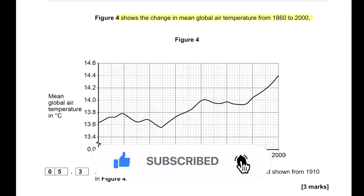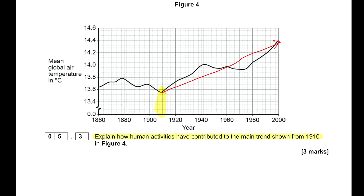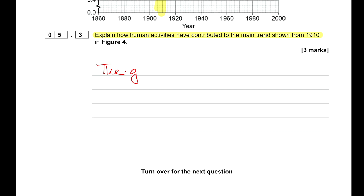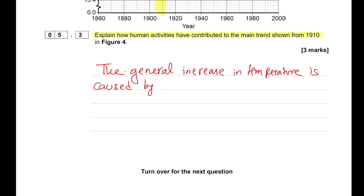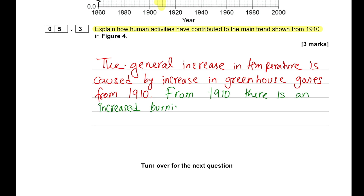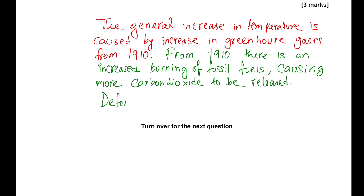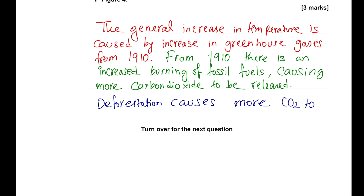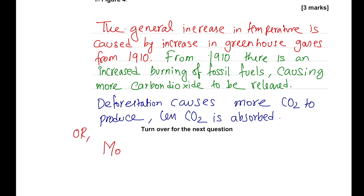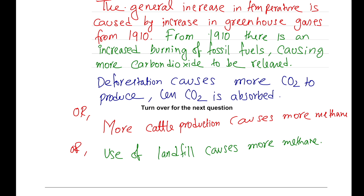Figure 4 shows the change in mean global air temperature between 1860 and 2000. From 1910 there is a general increase in temperature caused by increasing greenhouse gases. The main human activities responsible include: burning fossil fuels, which adds more CO2; deforestation, which adds CO2 and reduces absorption; increasing cattle production, whose digestion produces methane — a potent greenhouse gas; and increasing landfill use, which also produces methane. These all contribute to the warming trend shown from 1910 onwards.